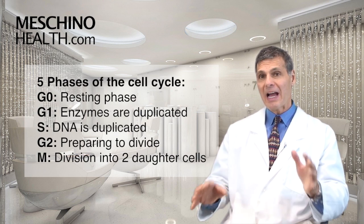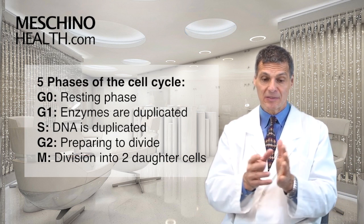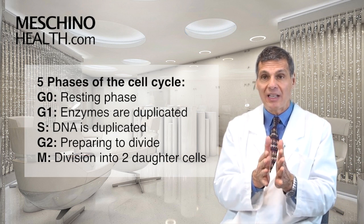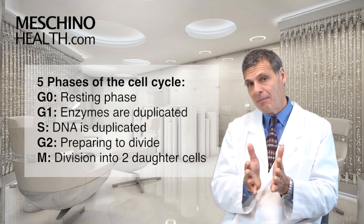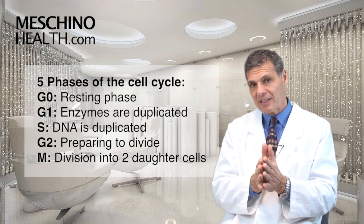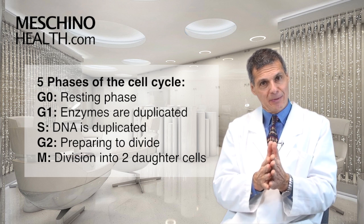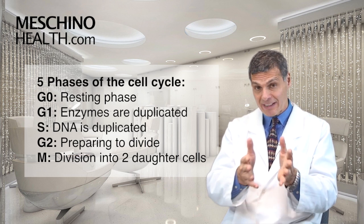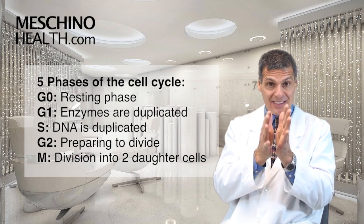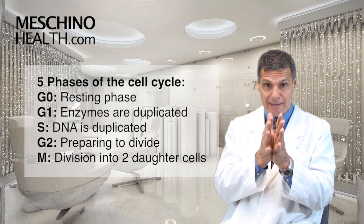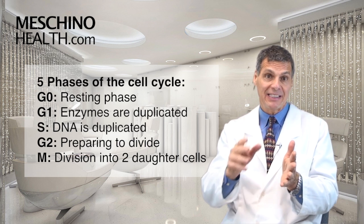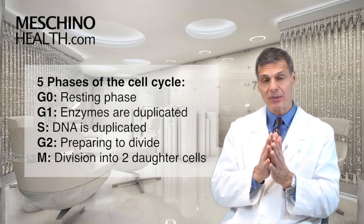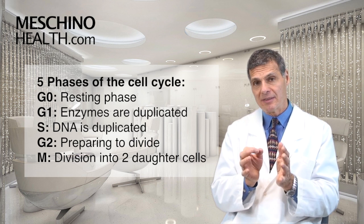Those five stages: first, there's the G0 phase where the cell is not dividing. Some cancer drugs are called non-cell-cycle-specific — they can actually sit inside a cell that's not dividing, wait for it to start dividing, and then try to kill it. So the G0 phase occurs when the cell is not dividing.